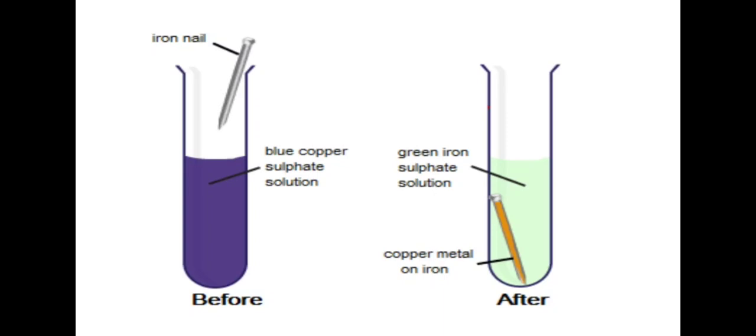They produce iron sulfate and copper. This copper is brown in color and forms the brown deposit which deposits over the iron nail.